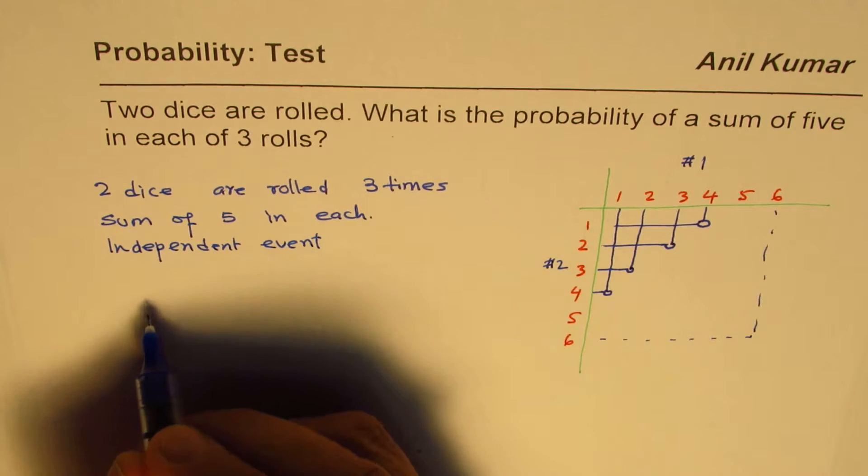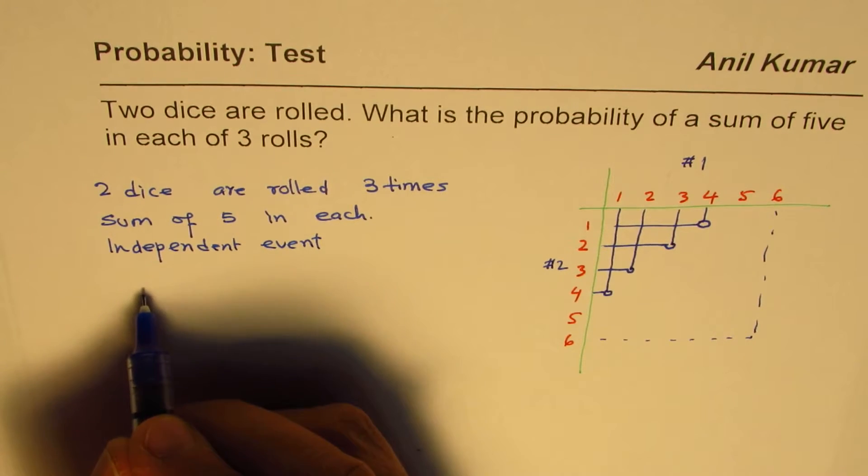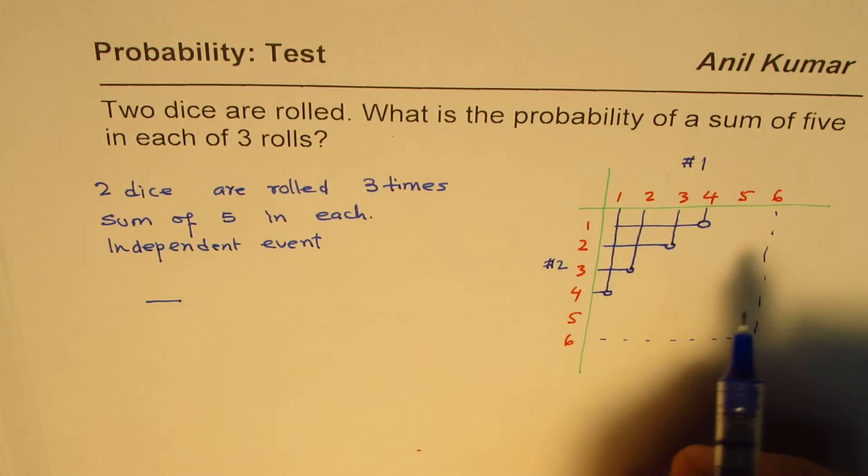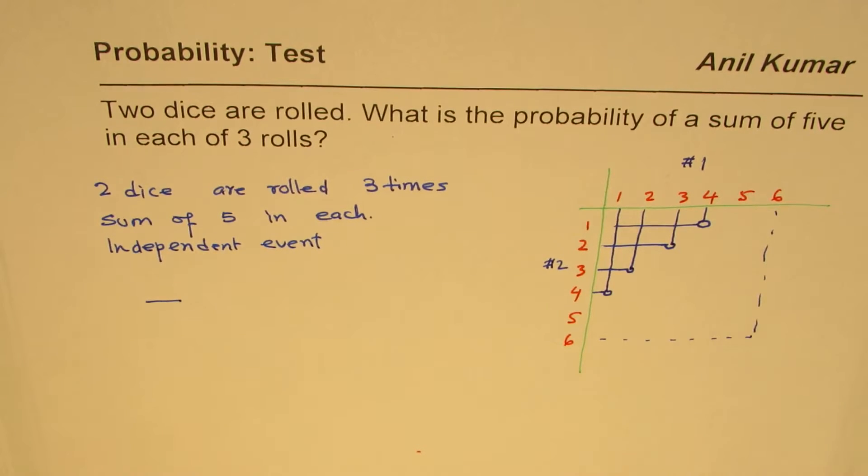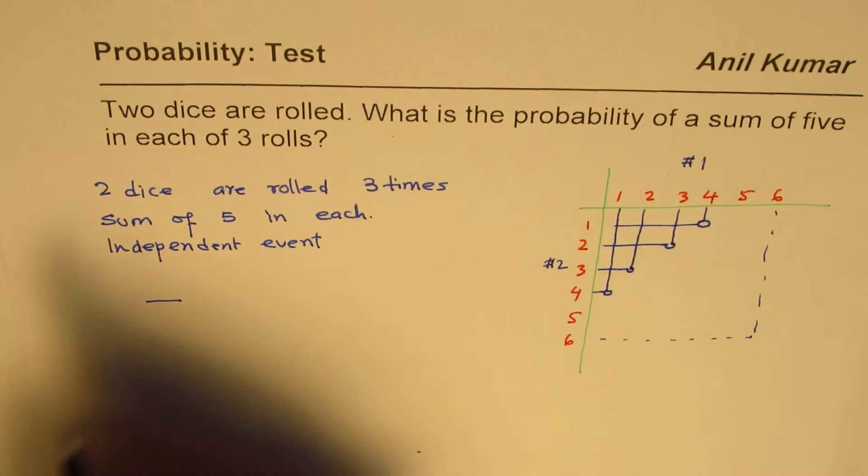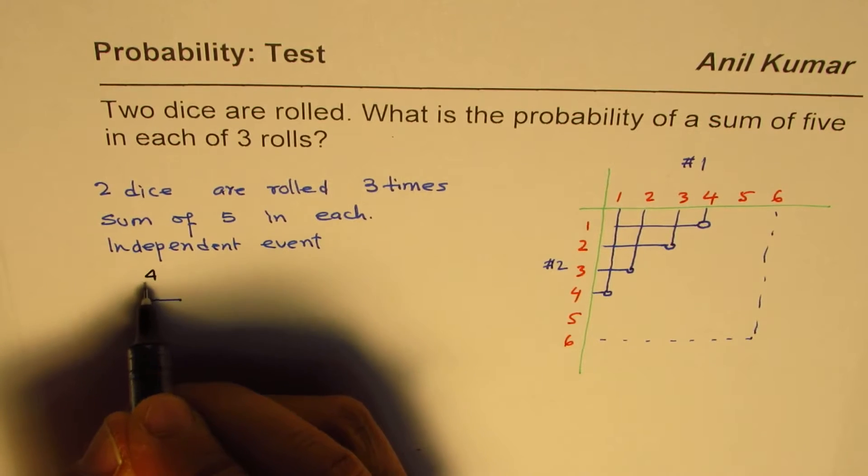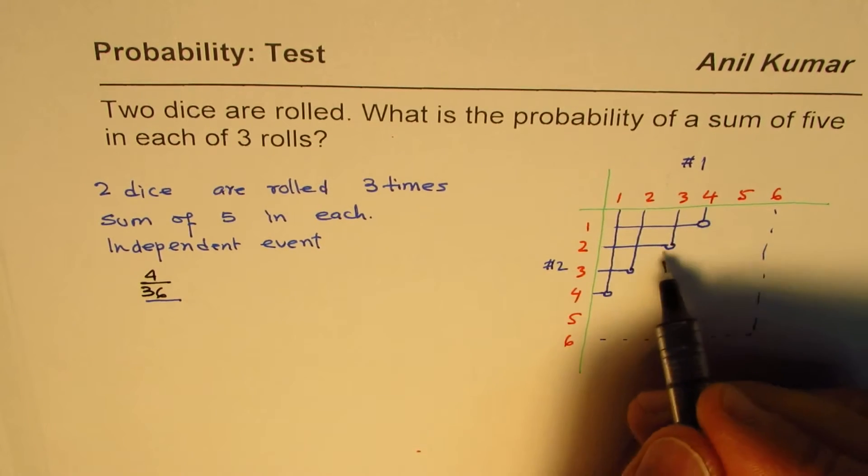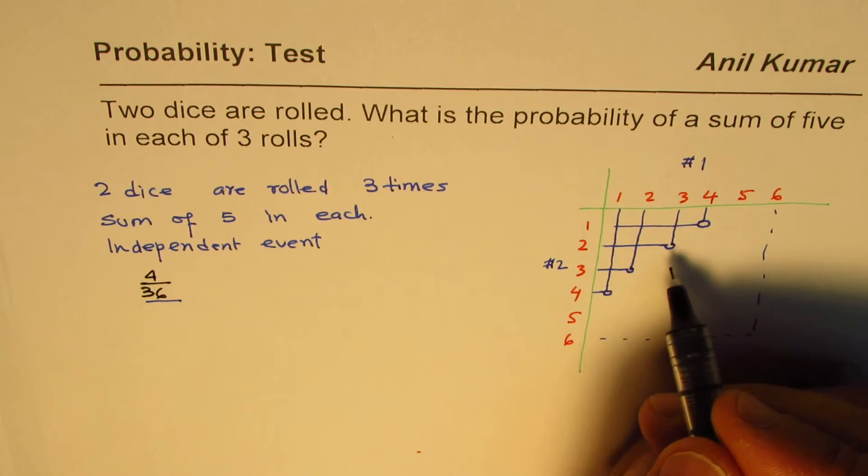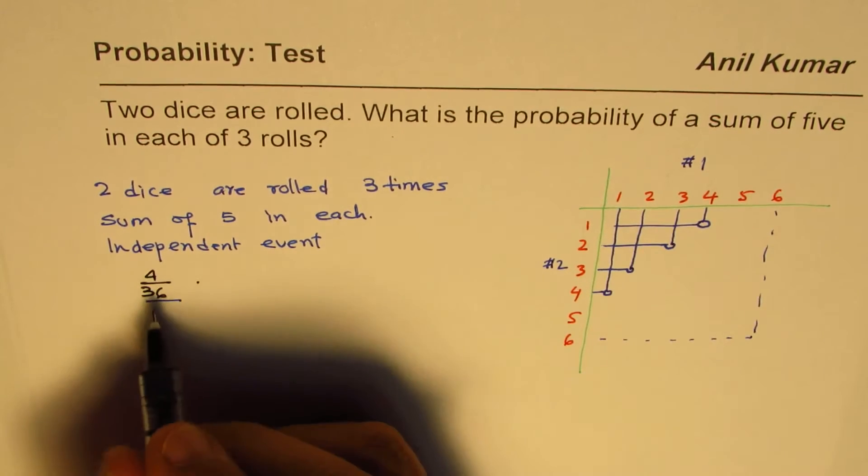So in the first roll, we can do one by one. Let's call this the first set of rolls. In the first set of rolls, the probability is four out of 36. So let me write down this probability as 4 out of 36, since these are the four combinations which will give you sum as five.